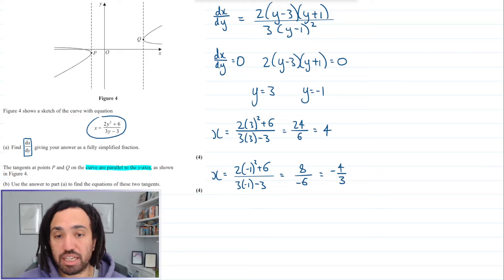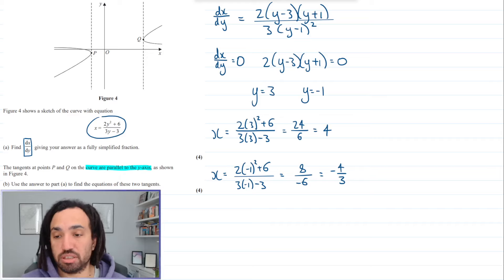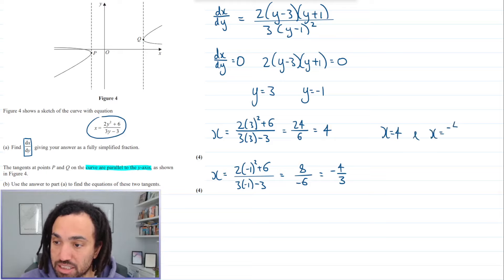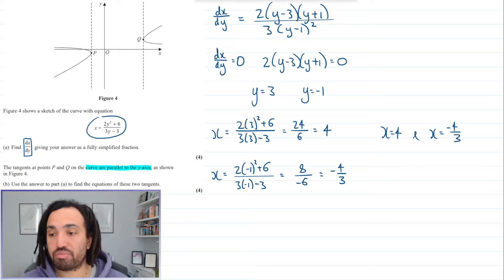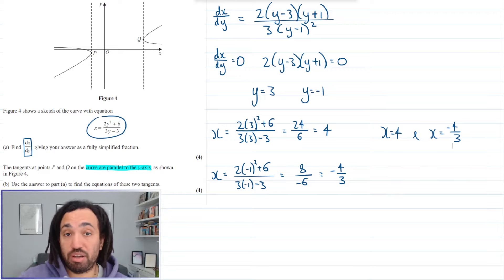And those are our tangents. Because they're vertical tangents, they're going to be of the form x equals. So we get x equals 4 and x equals negative 4 over 3. Hope you found that useful. Bye for now.